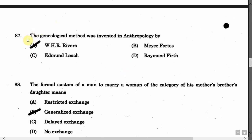The next question is: The genealogical method was invented in Anthropology by — Option A: W.H.R. Rivers. Option B: Meyer Fortes. Option C: Edmund Leach. Option D: Raymond Firth. The correct answer is Option A, that is W.H.R. Rivers.